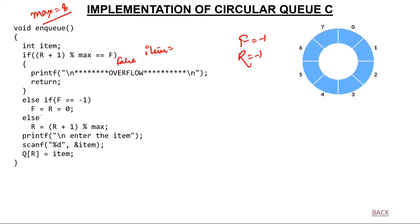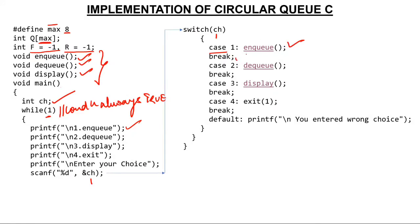Since overflow check is false, I go to the else-if: is front equal to -1? Yes — this means the queue is empty. So make both F and R equal to 0. Then I ask the user to enter an element. User enters 12, so item = 12, and Q[rear] = Q[0] = 12. After returning from enqueue, break exits the switch, but while(1) loops back again with the menu.